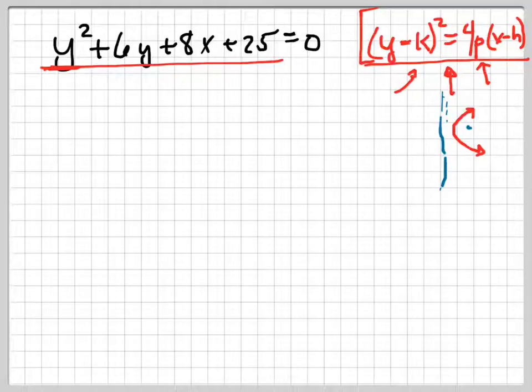And this distance right here, the distance from the directrix to the vertex, is p, and it's also the same as the distance from the vertex to the focus. All right, enough of that.